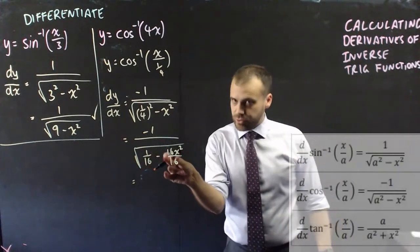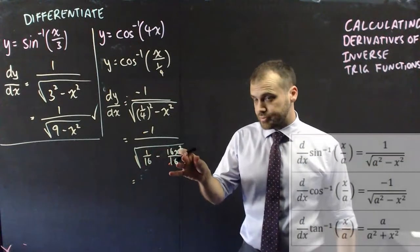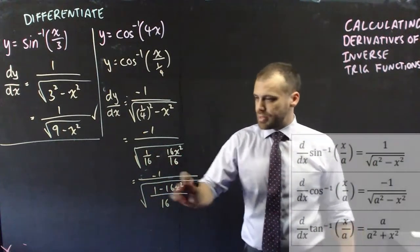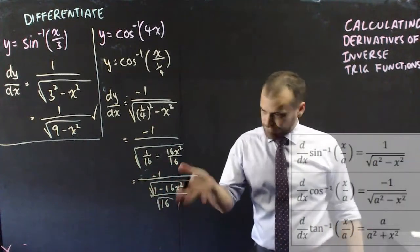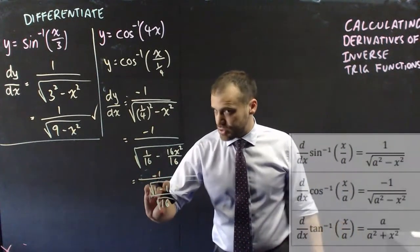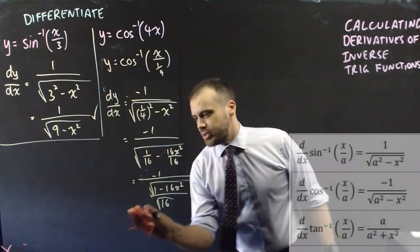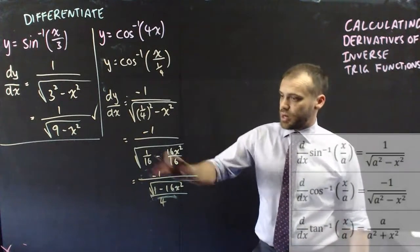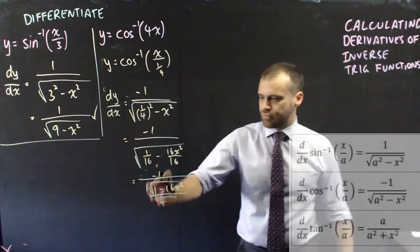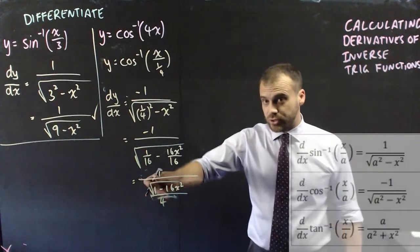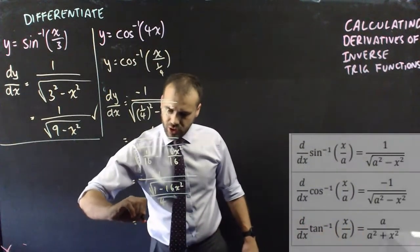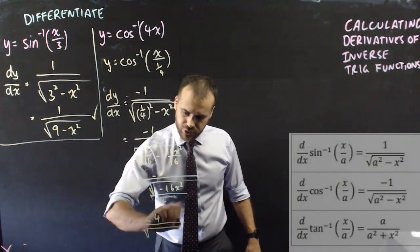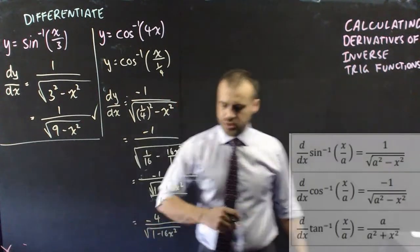When you do that, you can put that over a single denominator. But if you've got a whole fraction underneath a square root, that means it can be written as a square root and a square root. And finally, if we've got square root 16 on the bottom, we can rewrite square root 16 as 4. So we have negative 1 divided by all of that, and dividing by a fraction is the same as multiplying by the reciprocal of the fraction, which gives us a final answer of negative 4 over root 1 minus 16x squared.